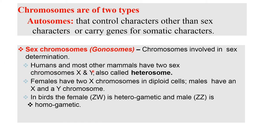Humans and most other mammals have two sex chromosomes, X and Y, also called heterosomes. Females have two X chromosomes in diploid cells. Males have X and Y chromosomes. In the case of birds, the female (ZW) is heterogametic and the male (ZZ) is homogametic.